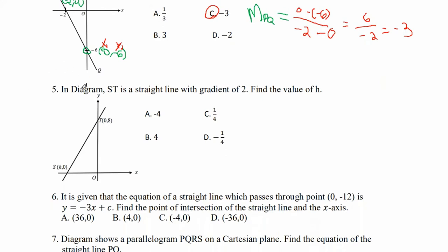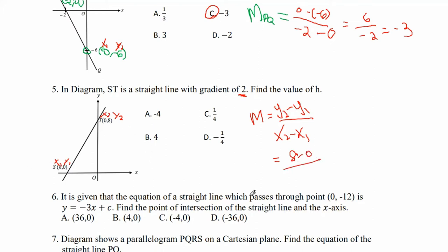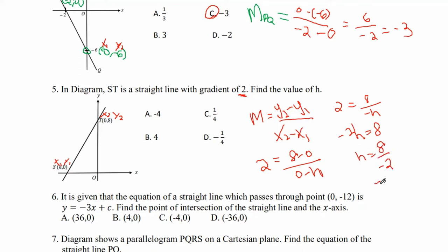Number 5: in the diagram, ST is a straight line with gradient of 2. Find the value of H. Let one coordinate be x1, y1 and the other be x2, y2. Gradient = (y2 minus y1) over (x2 minus x1) = (8 minus 0) over (0 minus H) = 8 over negative H. We are given gradient equals 2, so 2 equals 8 over negative H. Solving: negative 2H equals 8, so H equals 8 over negative 2 = negative 4. The answer is A.